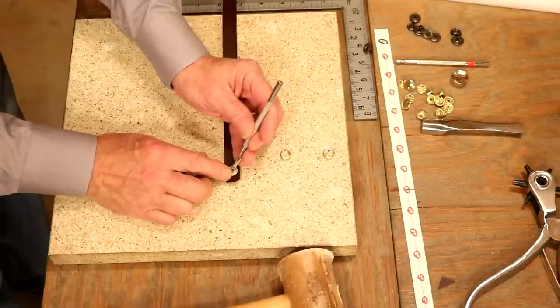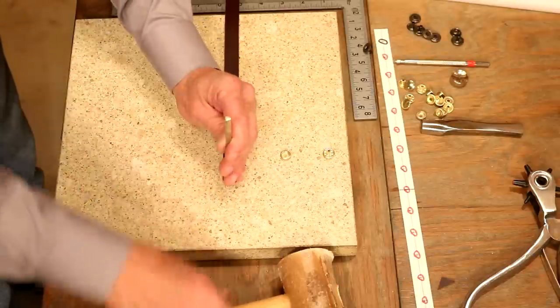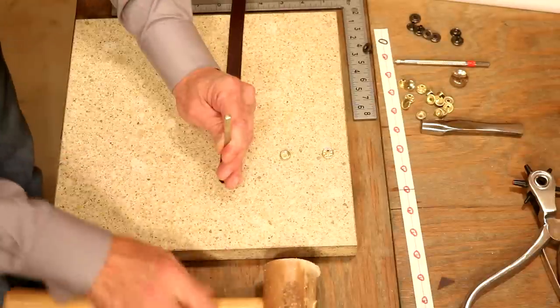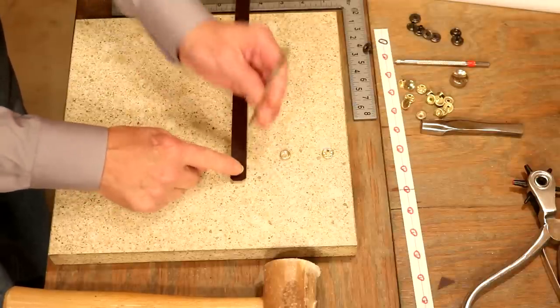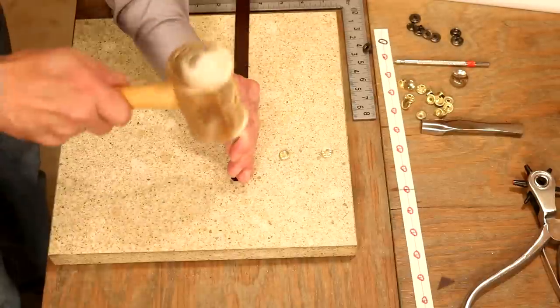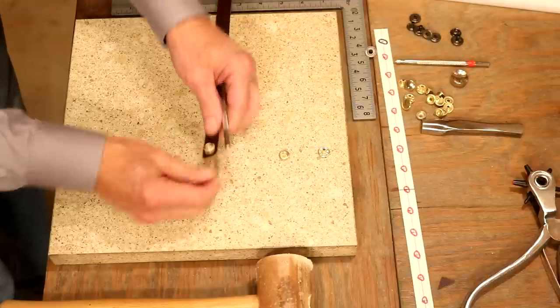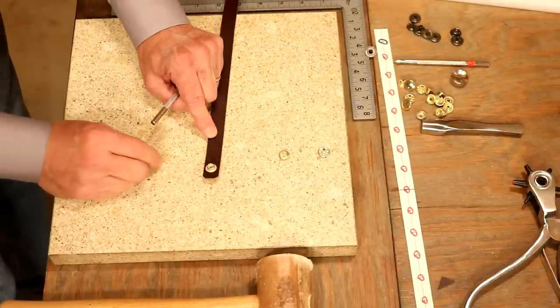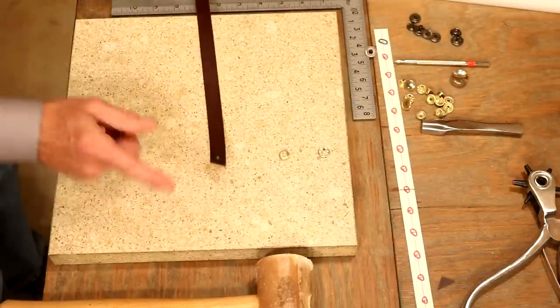Now, what I'd like to do is let's try to hit this as square as we can because what we're doing is we're curling that little post down inside the female piece. There we go. Yeah, notice how that curled down so nicely. Let's get this just to where it won't spin. I don't want to hit it so hard that I actually compress the leather too much.